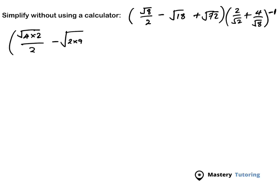And then plus 72 can be written as 2 times 36. So this is going to be 2 times 36. Close the bracket, and then on this other side we have 2 over square root of 2. Now this 2 over square root of 2 is not going to change, so we're going to leave it as it is.